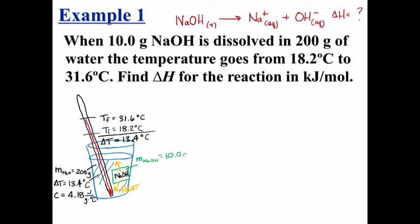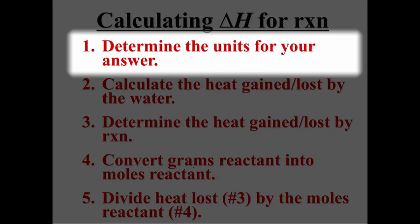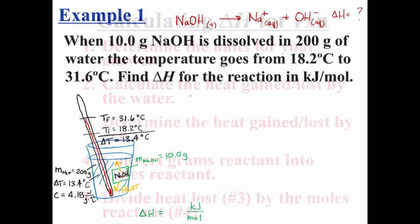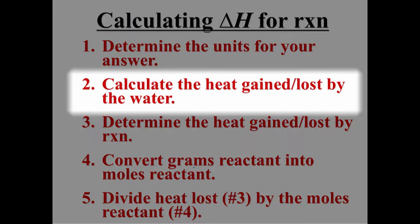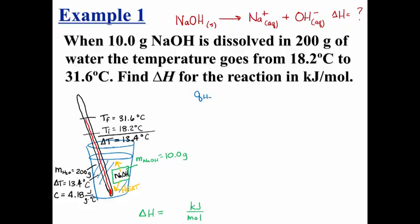To solve this, I'm going to use my steps, beginning with step one, to determine the units of my unknown, which are kilojoules per mole. Step two says to calculate the heat gained by the water. This is known as q, and will be equal to the mass of the water, times the specific heat of water, times the temperature change of water.